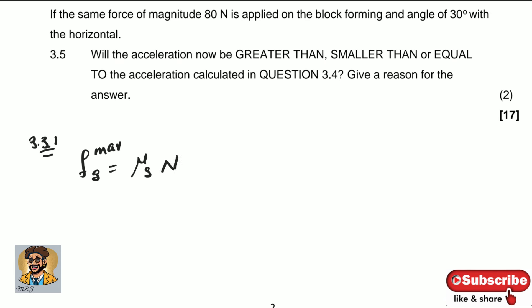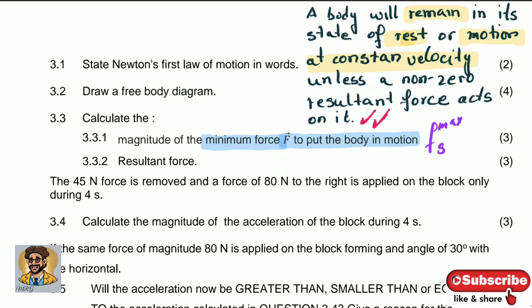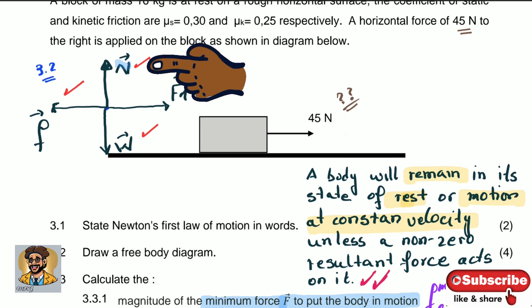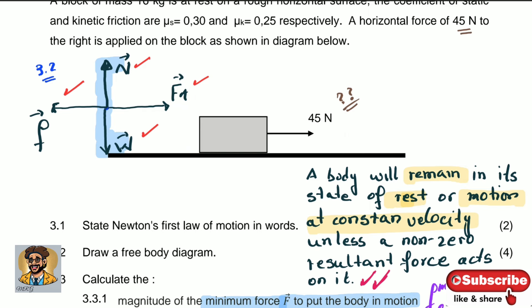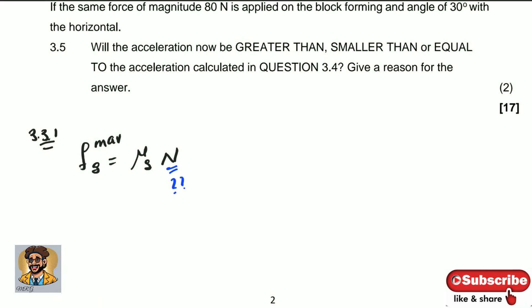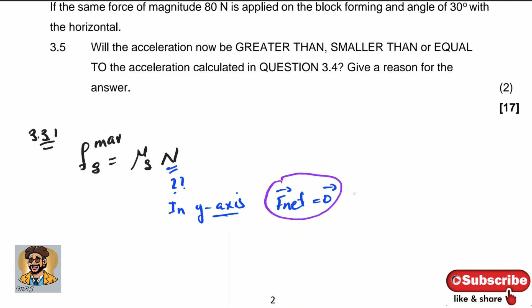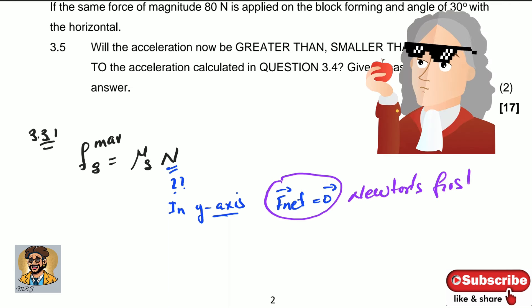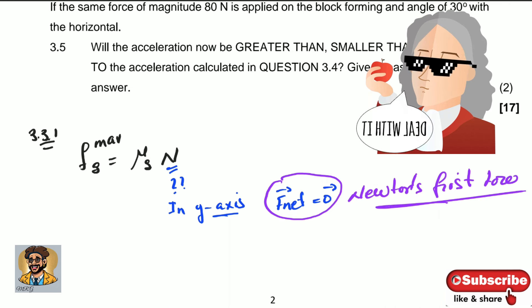Going back to the free body diagram, the normal force is on the y-axis. The only two forces in the y-axis are the normal and weight. Since the object is not moving in the y-axis, the net force equals zero — and this application of Newton's first law gives us: N − W = 0, so N = W.